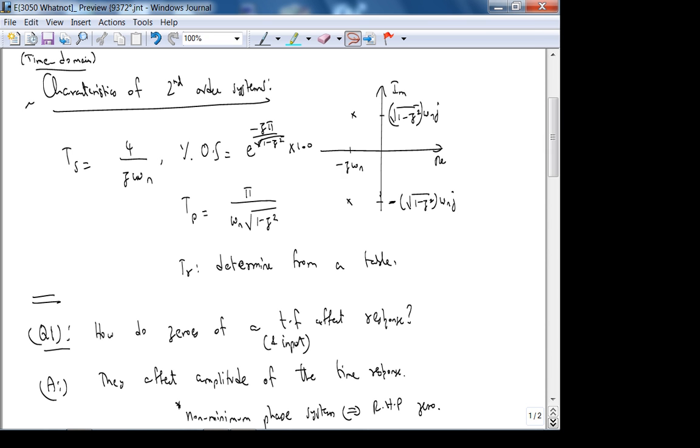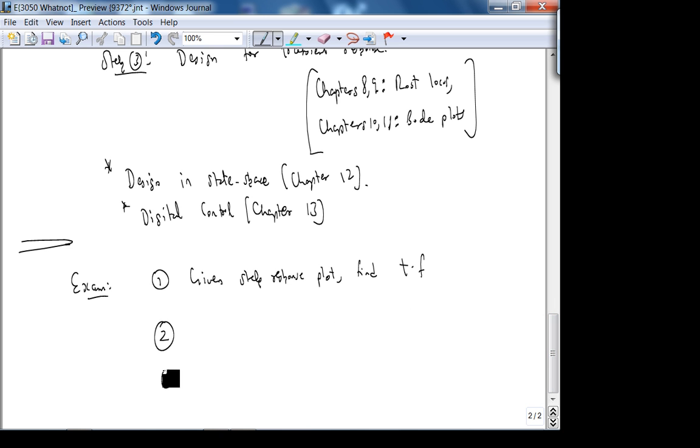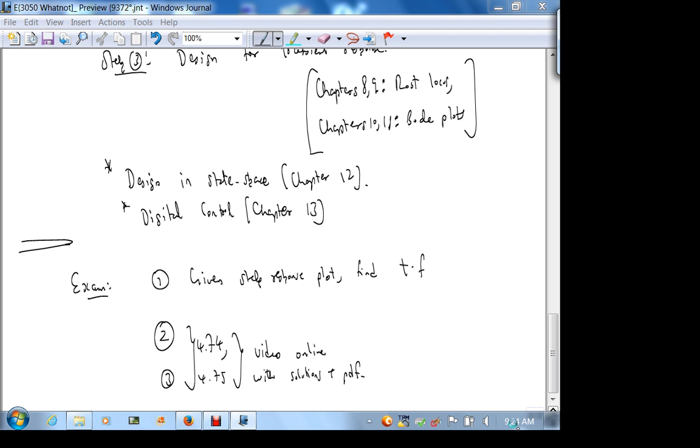On your exam, you'll have basically four questions. Question one is: given step response plot, find transfer function. You can read an example of this. Second and third are problems 474 and 475. I have posted the video online. We solved 74, I also solved 75. So it's online. Did anybody look at it yet? Look at it. Video online with solutions along with PDF.